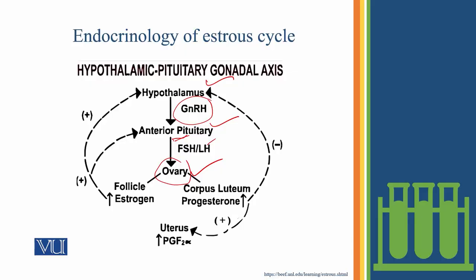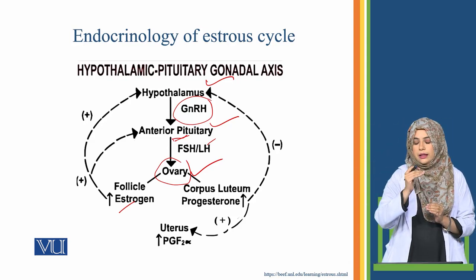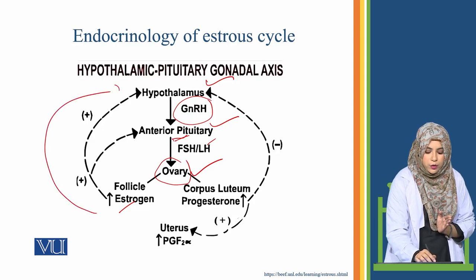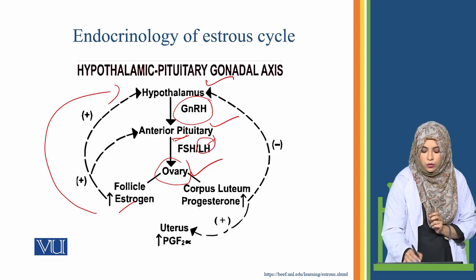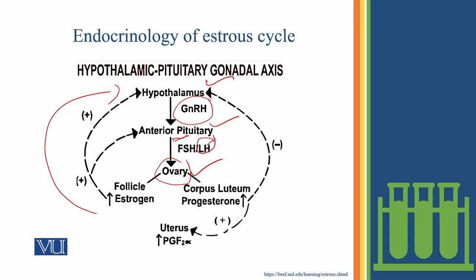As the follicles grow, estrogen hormone is produced. As estrogen increases in the blood, it gives positive feedback to the hypothalamus, which again produces gonadotropin-releasing hormone, causing the anterior pituitary to secrete more hormones. This elevated estrogen also causes signs of estrus such as restlessness and willingness to be mounted by another animal. Estrogen also causes uterine contractions, which allows sperm transport in the female tract after insemination.